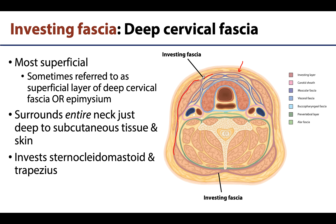The investing fascia will send extensions that completely invest the sternocleidomastoid muscles as well as the trapezius, which is the more posteriorly oriented muscle. You can see offshoots of this fascia surrounding those muscles in the illustration.